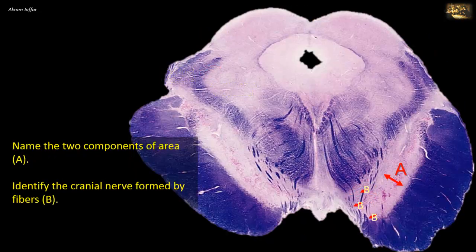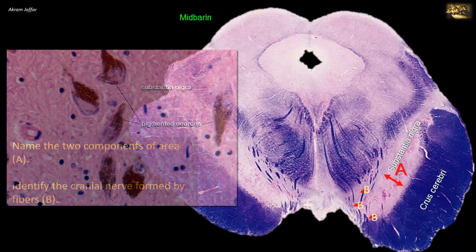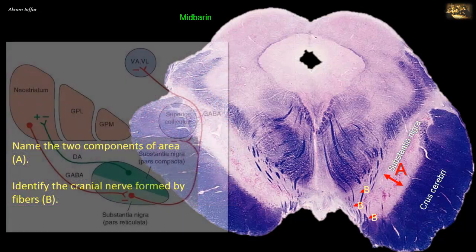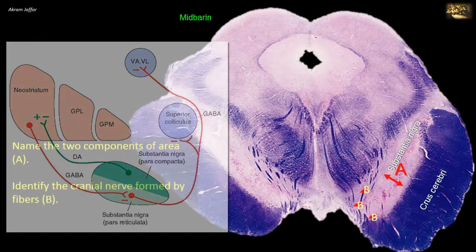Name the two components of area A. This is a section of the midbrain showing the cerebral peduncle comprising the crus cerebrae — the darkly stained fibers — and the substantia nigra. Substantia nigra is area A. It is a motor nucleus that consists of two regions: pars compacta, the compact zone, and pars reticularis, the reticular zone. The compact zone is made up of distinctly pigmented neurons, while the reticularis contains non-pigmented neurons. The substantia nigra is reciprocally connected to the corpus striatum, and its neurons undergo degeneration in Parkinson's disease.